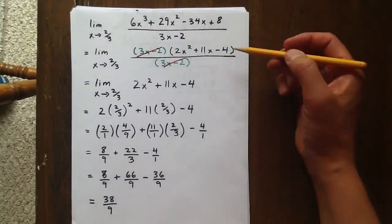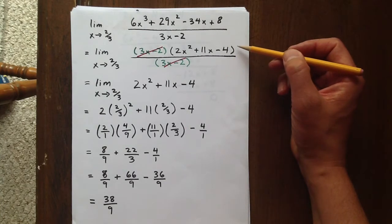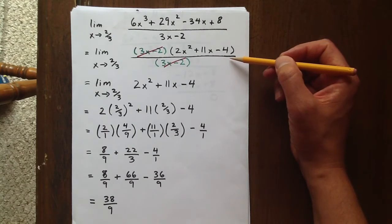So coming back to our original question, we substitute that in, and we have 3x minus two times 2x squared plus 11x minus four in the numerator.